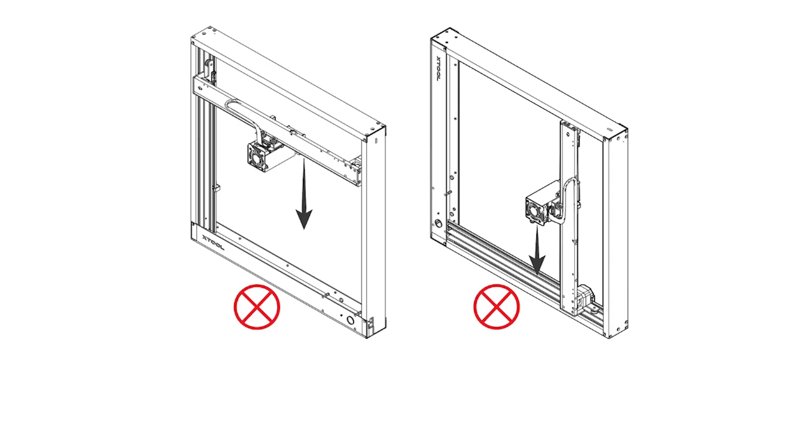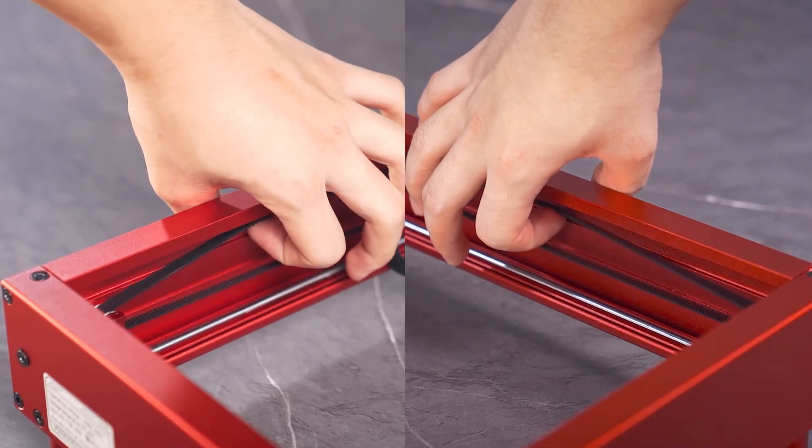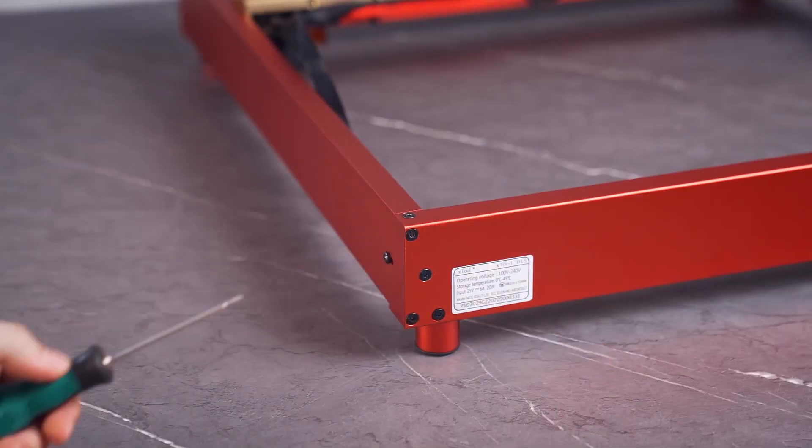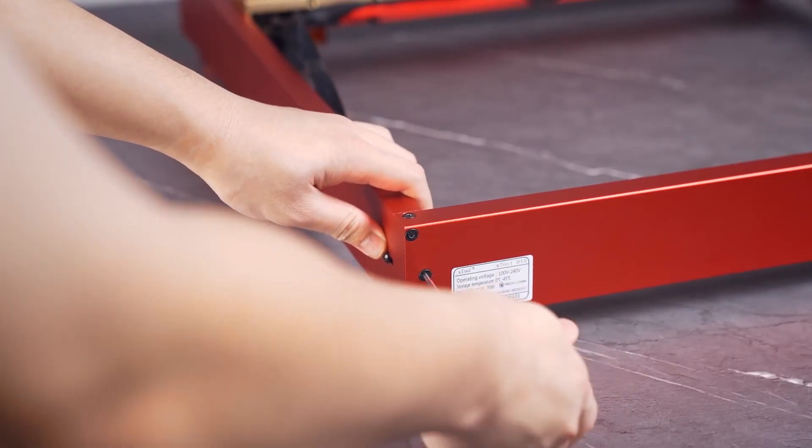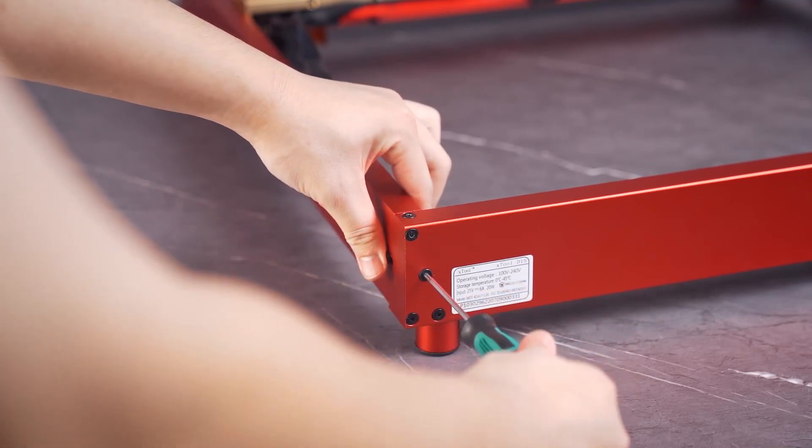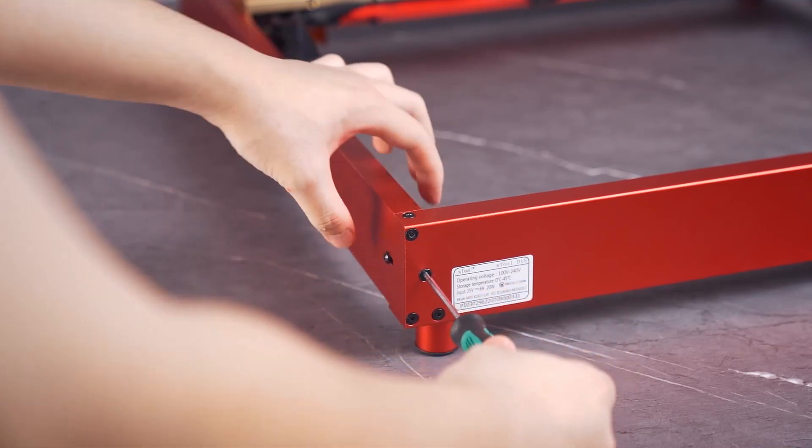Precaution. Prevent the middle plate and laser module from falling down themselves. Otherwise, the limit pieces may be damaged. Adjust the tension of the timing belts. Try to set the timing belts on the right and left plates to the same tension so that XTool D1 Pro can cut and engrave materials properly.